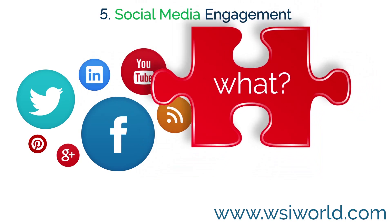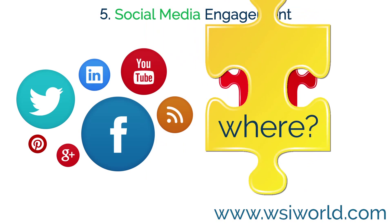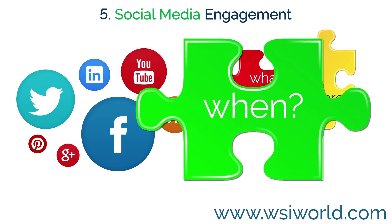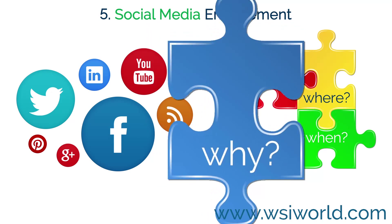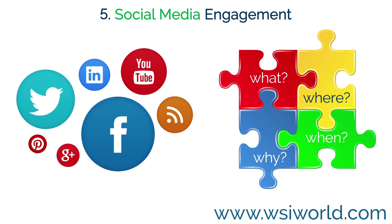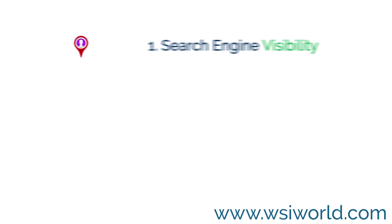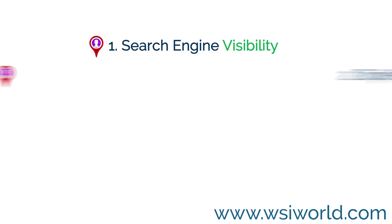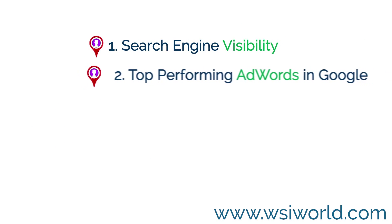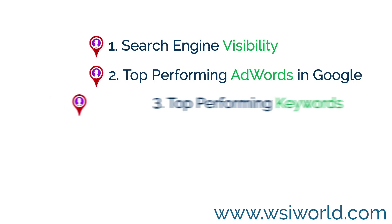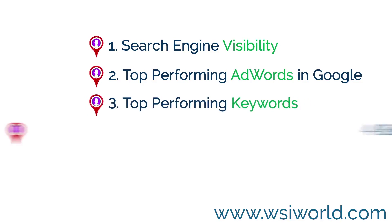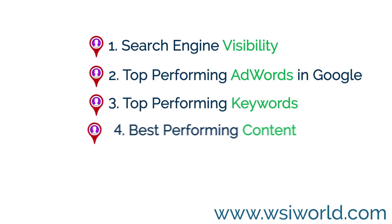Five: social media engagement. Researching where your competitors are most active on social media will show you which social networks and what type of content is already proving popular among your target audience. Once armed with this information, you can use it to gain a competitive advantage by improving on what your business rivals are doing.